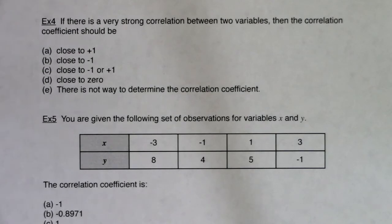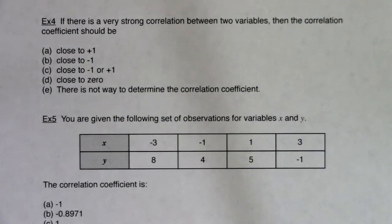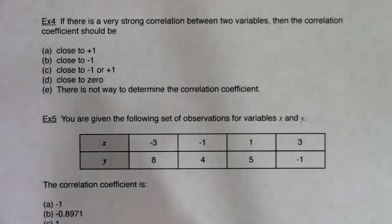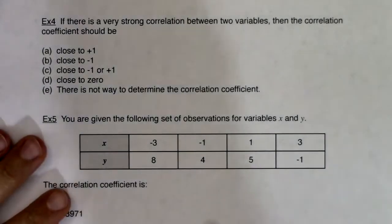All right, let's try a few multiple choice questions together. For example 4, if there is a very strong correlation between two variables, then the correlation coefficient should be — and we've got to figure it out.